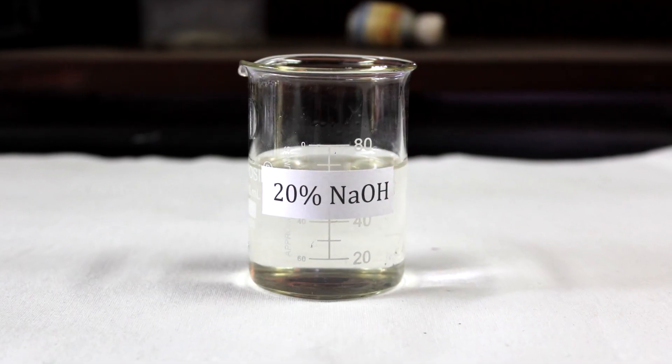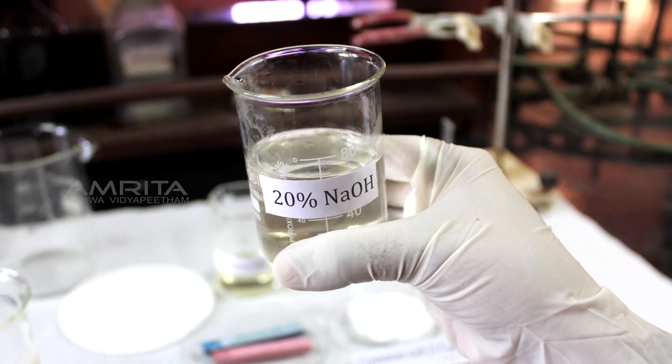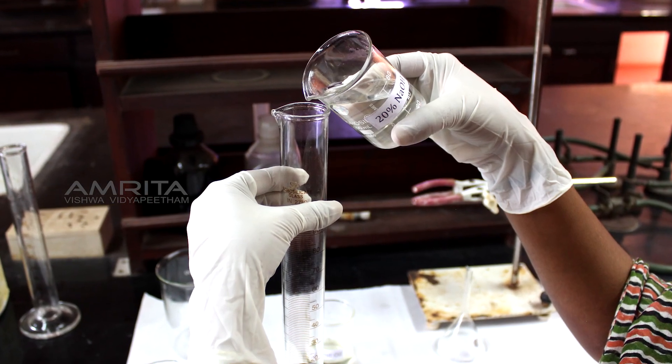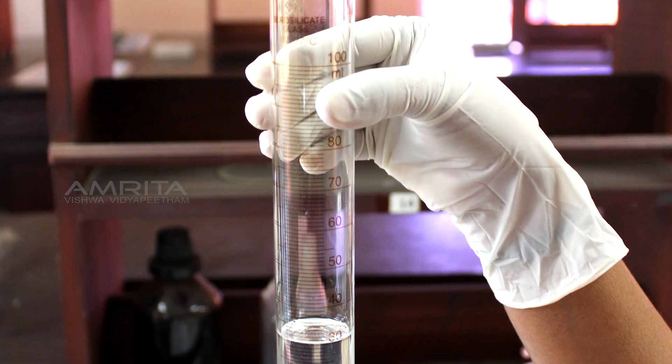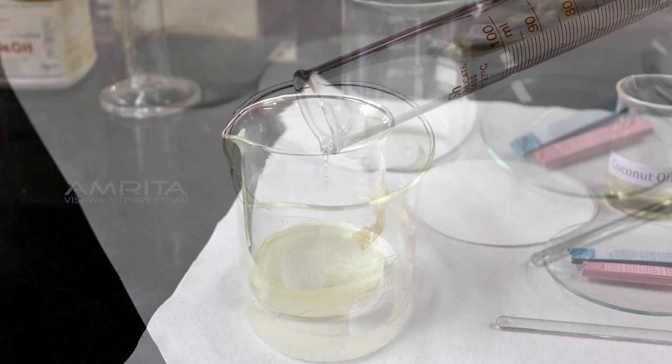Now take the beaker containing 20% sodium hydroxide solution. Pour 30 ml 20% sodium hydroxide into another measuring cylinder. Transfer it into the beaker containing coconut oil.